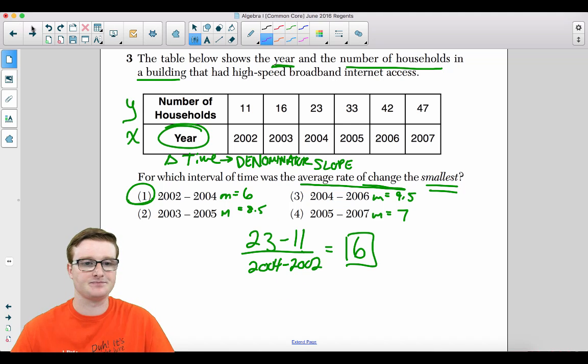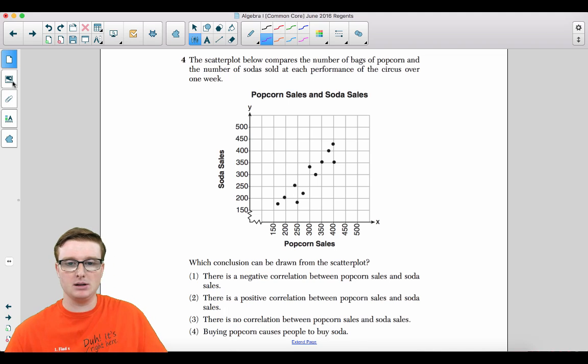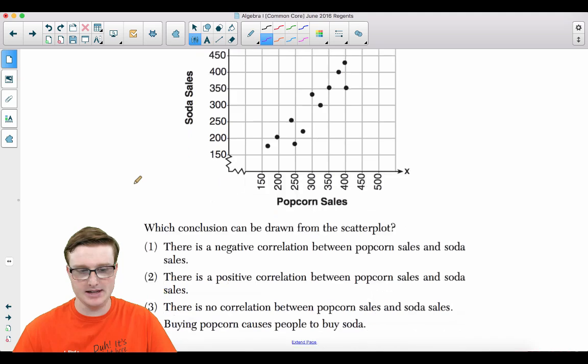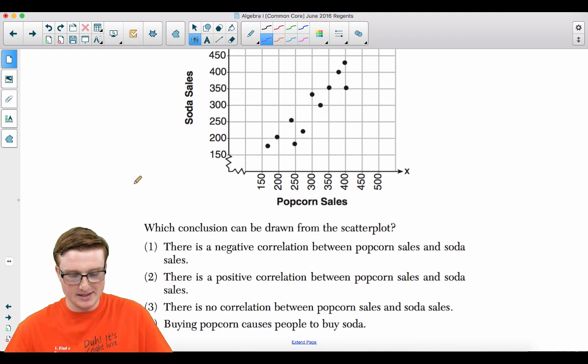Moving on to number four. The scatter plot below compares the number of bags of popcorn and the number of sodas sold at each performance of the circus over one week. Which conclusion can be drawn from the scatter plot?